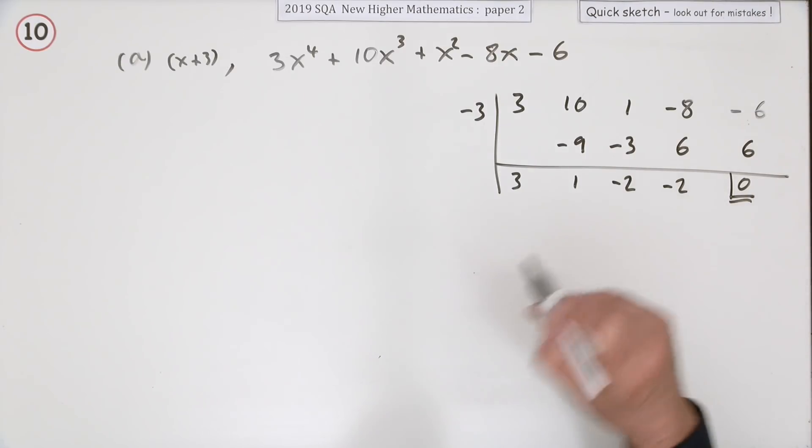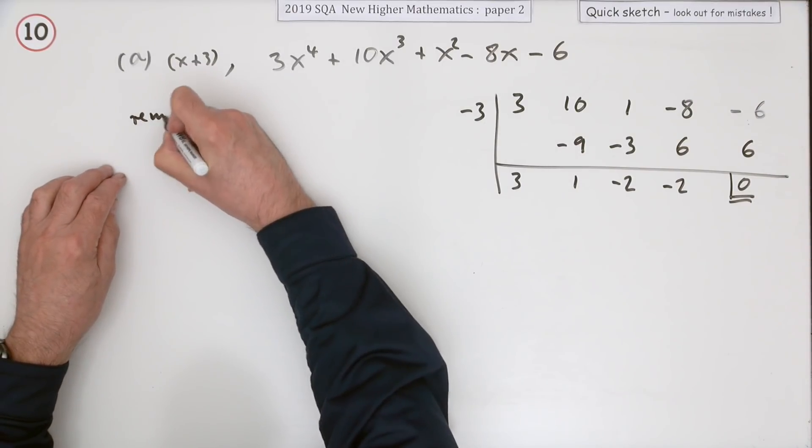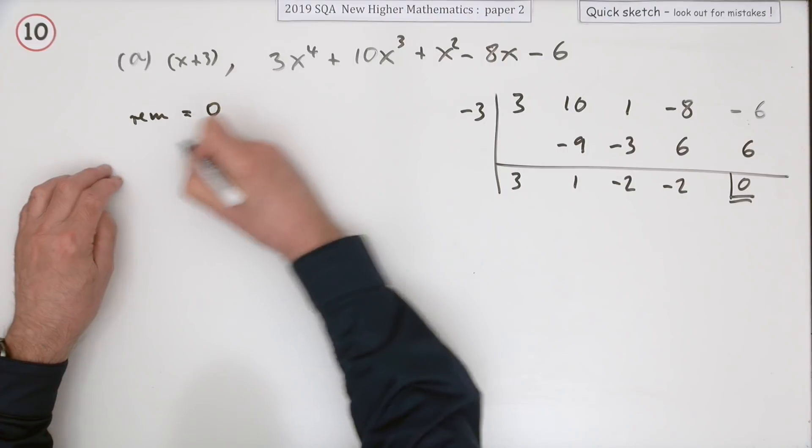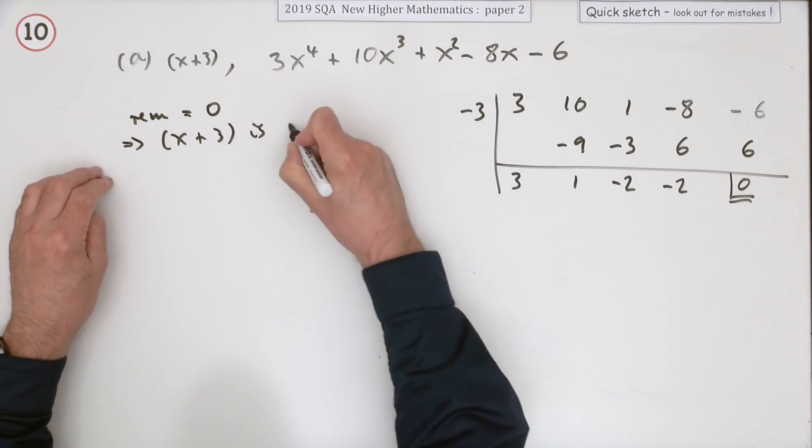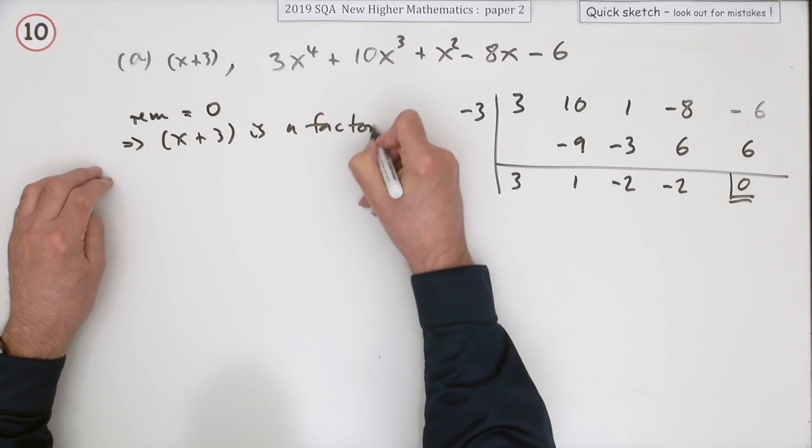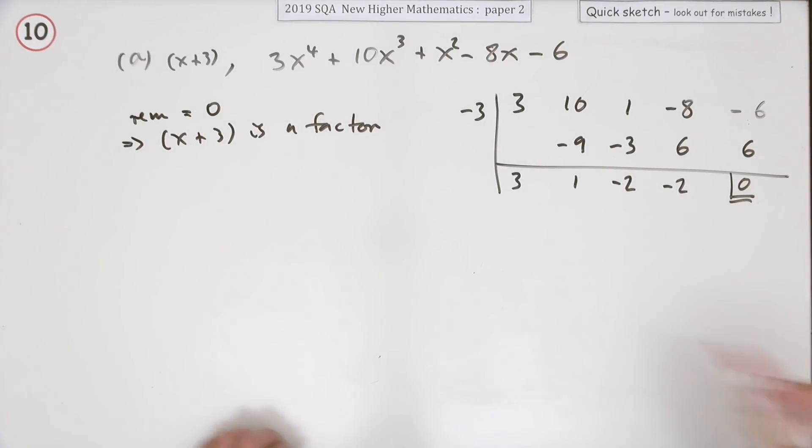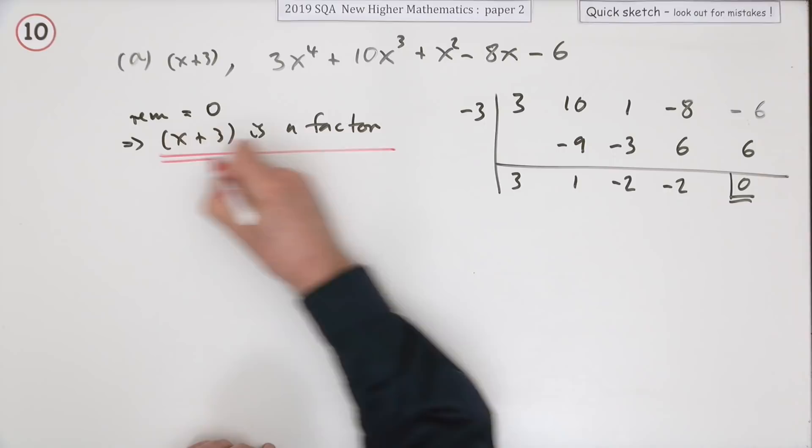That's not sufficient, of course. You have to make a statement, and the statement is: the remainder equals 0, which means x+3 is a factor, because it divided in exactly.